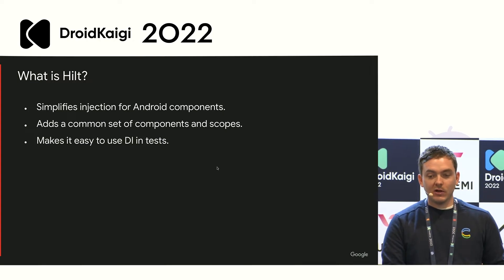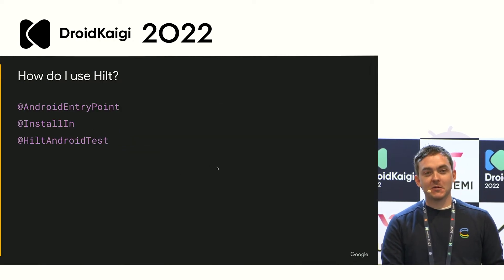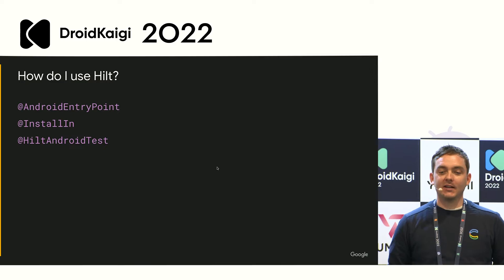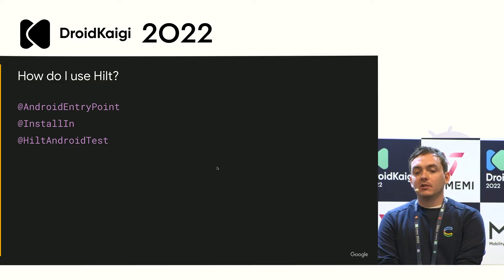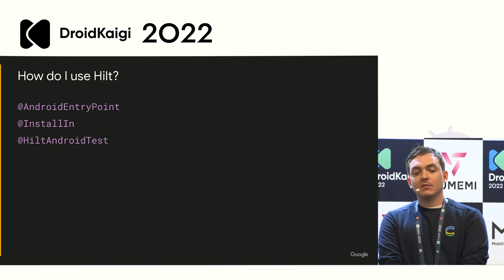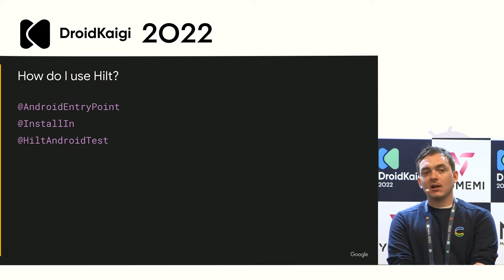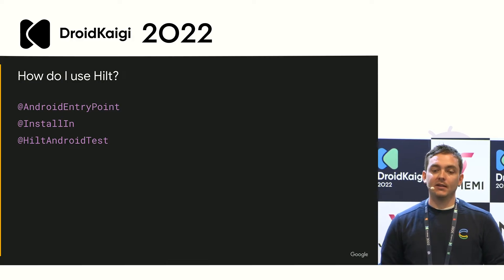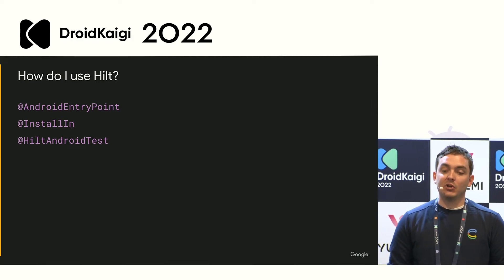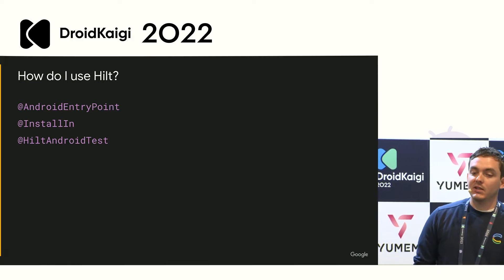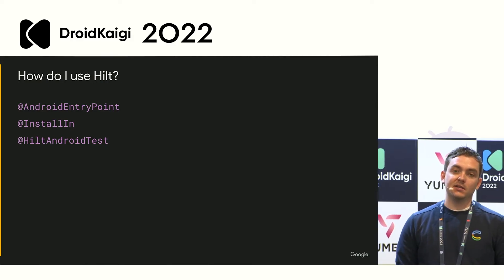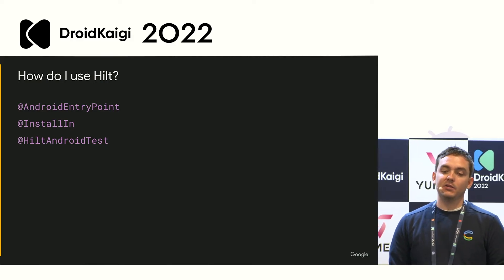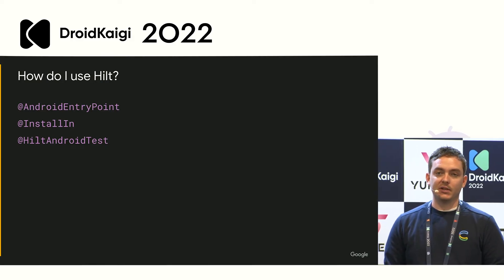Just like before, Hilt comes with its own set of annotations. There's a bit more than this, but I don't think it's useful to dive too low level. The most common ones you'll see are @AndroidEntryPoint, @InstallIn, and @HiltAndroidTest.